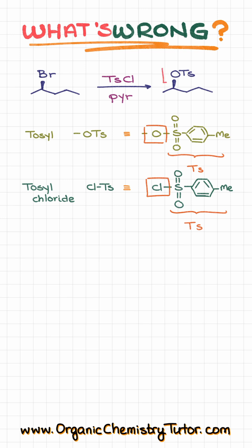So, in order to get that tosylate as the functional group in your product, the leaving group that we have over here cannot be a bromine, it has to be something oxygen-containing, something like an OH group.